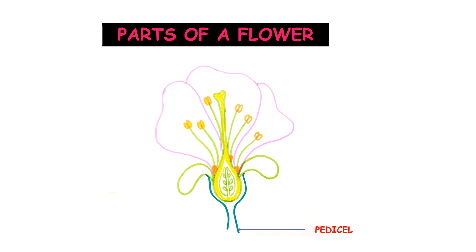We start with the first part: the stalk or peduncle, which supports the flower. Some flowers may not have a stalk, and then they are known as sessile. The tip of the stalk may be expanded to form what is known as the thalamus or receptacle.